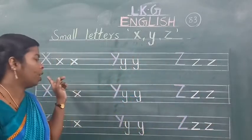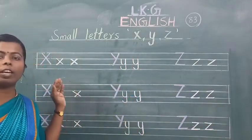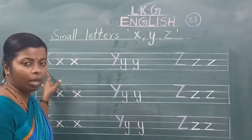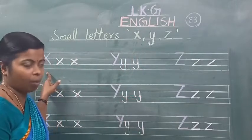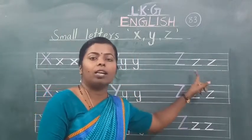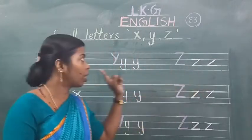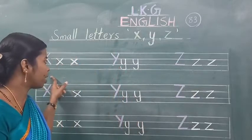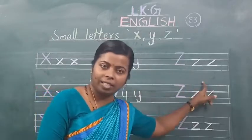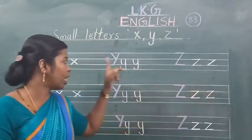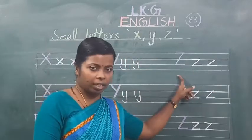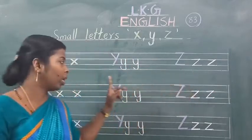Now we will read it together. Bolo sab — X, Y, Z. Once again: X, Y, Z.